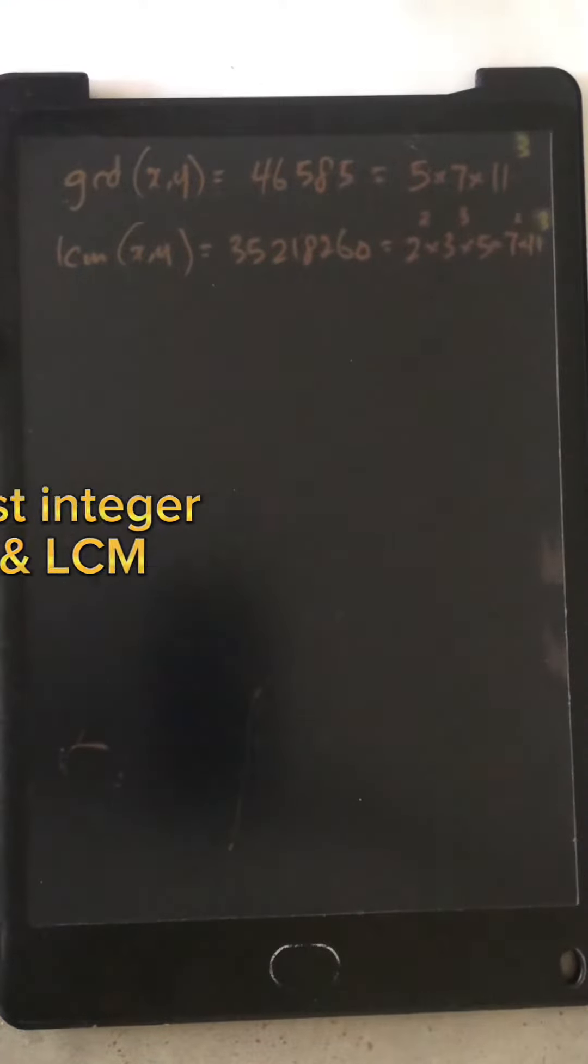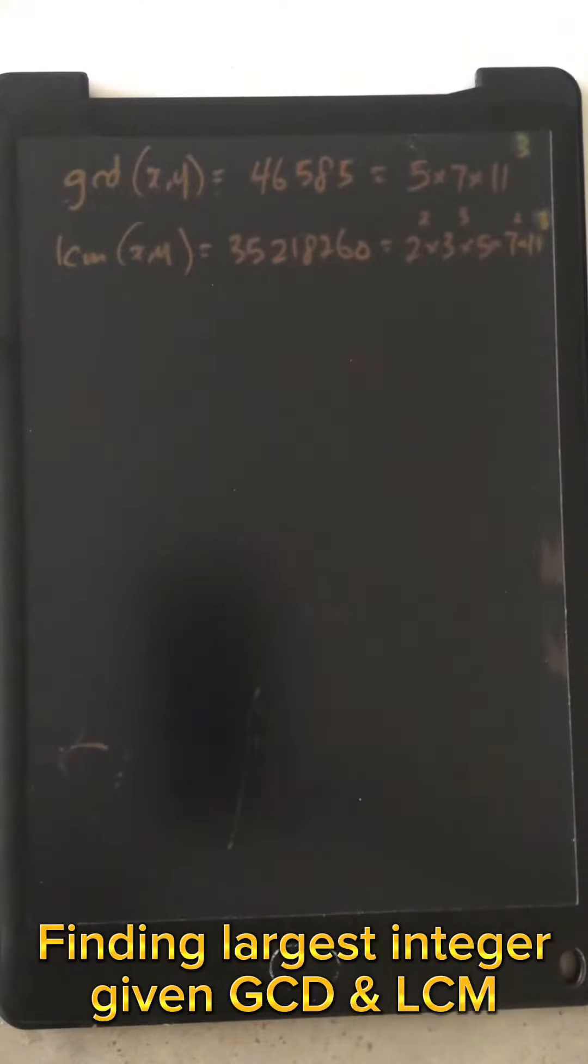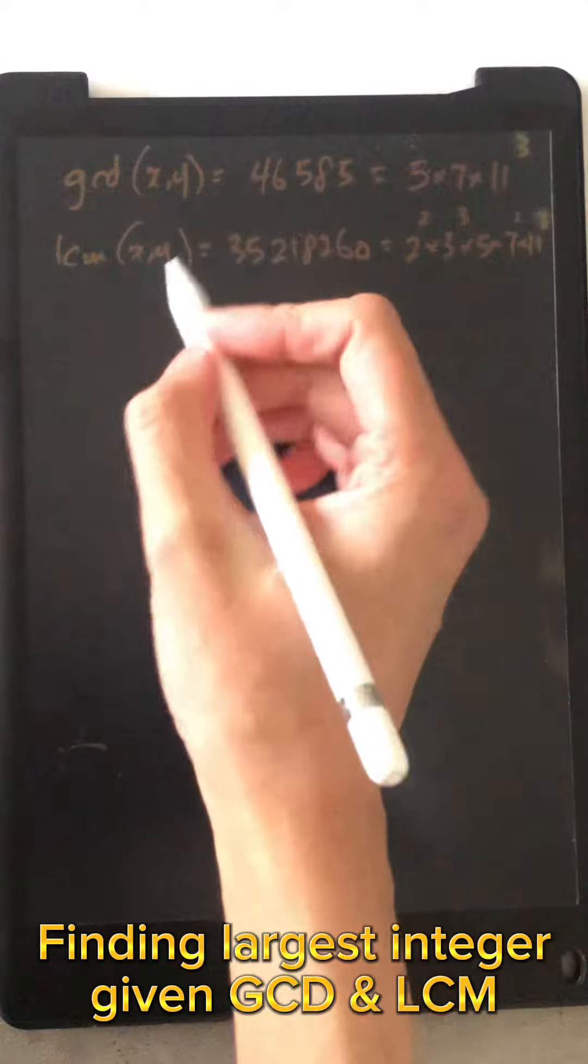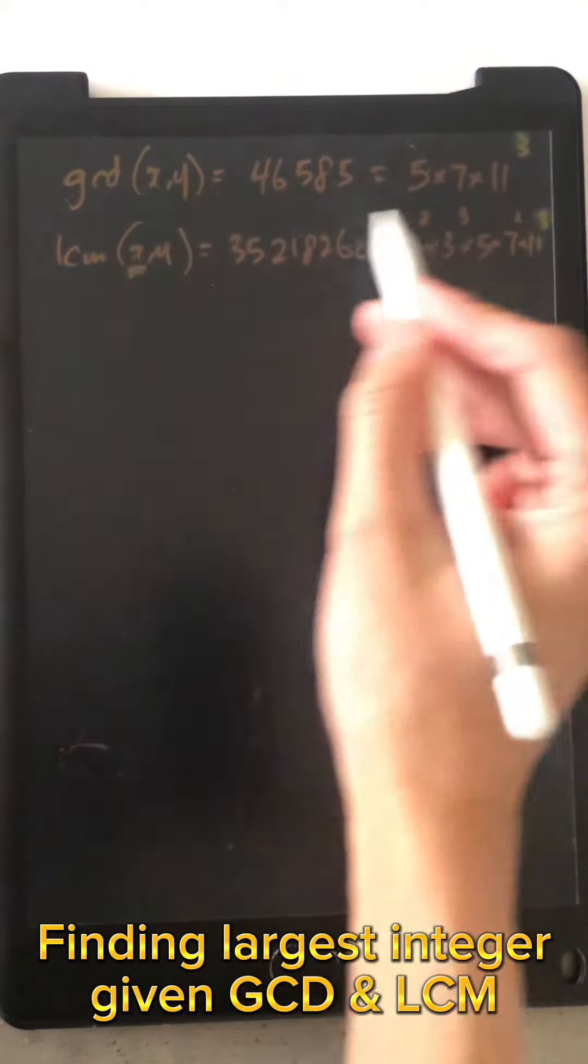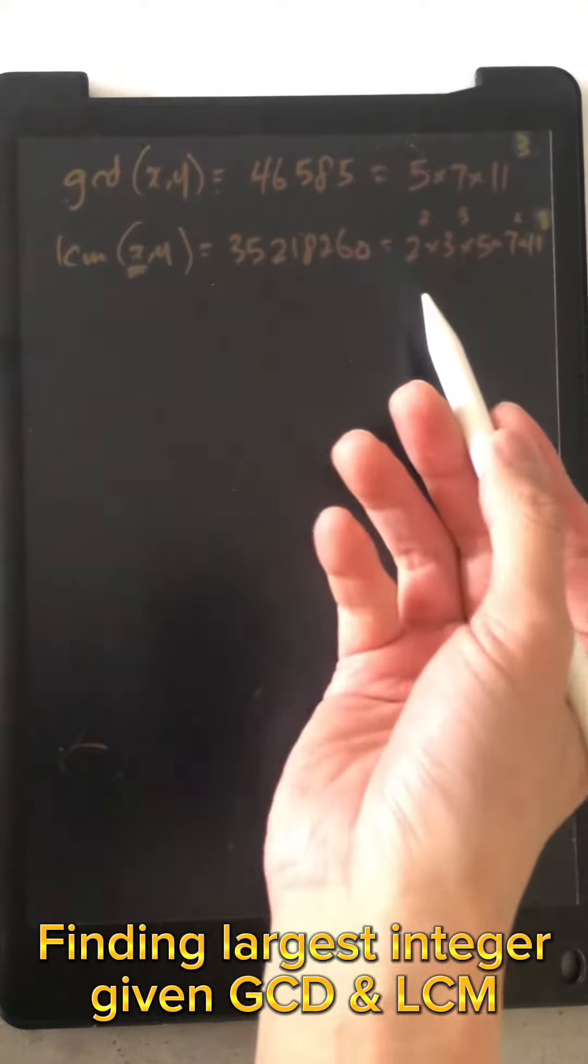Alright, so we have another question from our members. The problem is, given the GCD and LCM of two large numbers, we want to find the largest x such that x is not equal to the LCM, because that would just be simple, right?